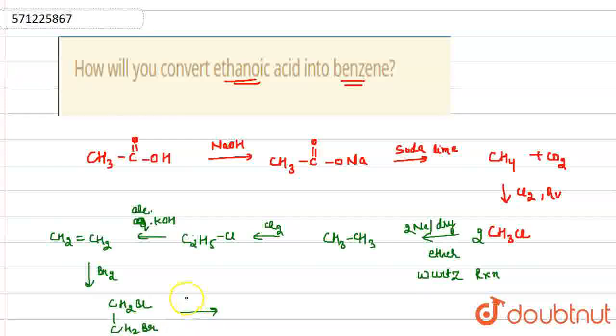For dehydrohalogenation reaction we will again use alcoholic KOH for this. Thus formation of CH triple bond CH, that is acetylene, occurs.